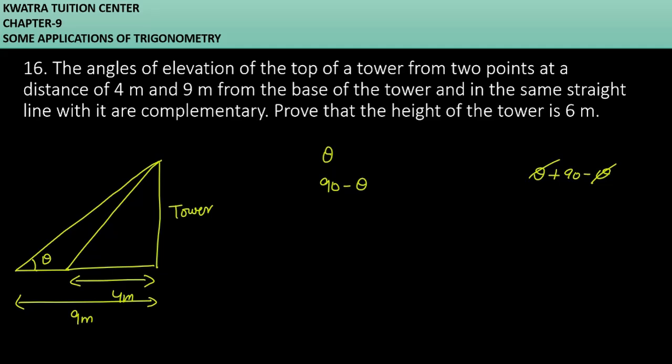So we have to focus on this. If this is theta, this is 90 minus theta. So what do we want to do? We have to find the height of the tower which they have already told you is 6 meter. This is our height of the tower, it is 6. We have to prove it. Let's see how we do it.